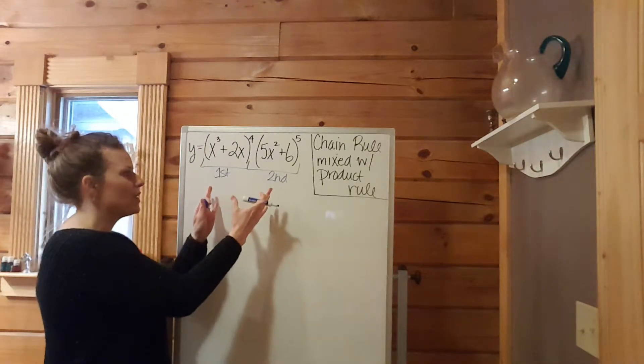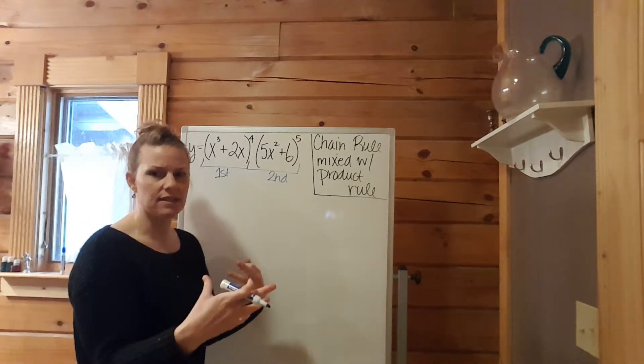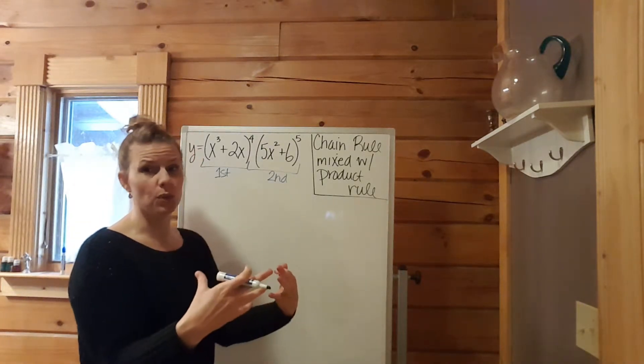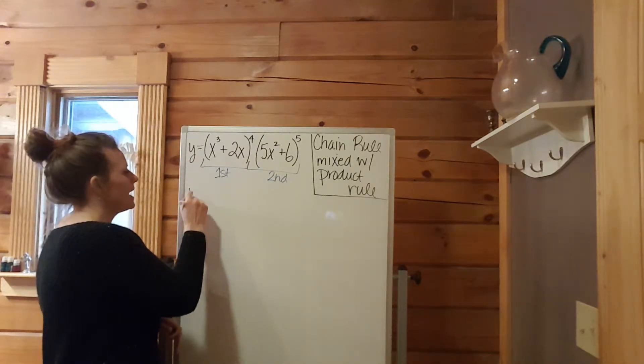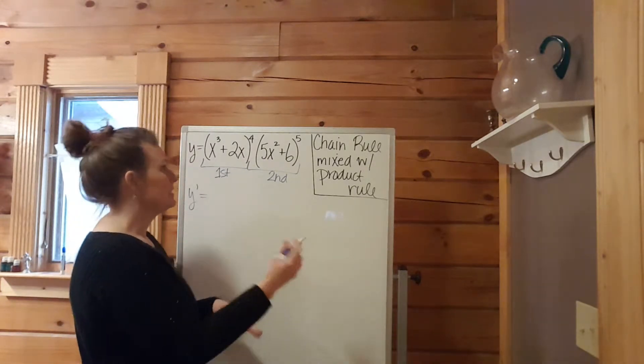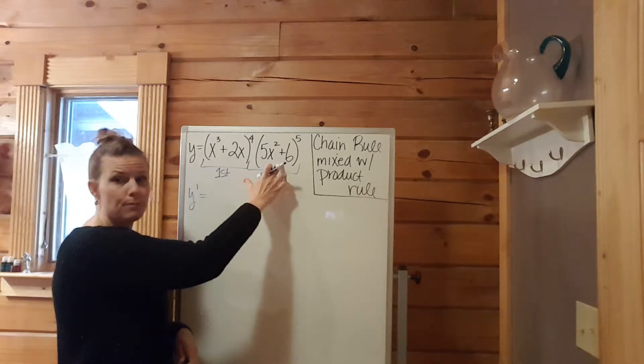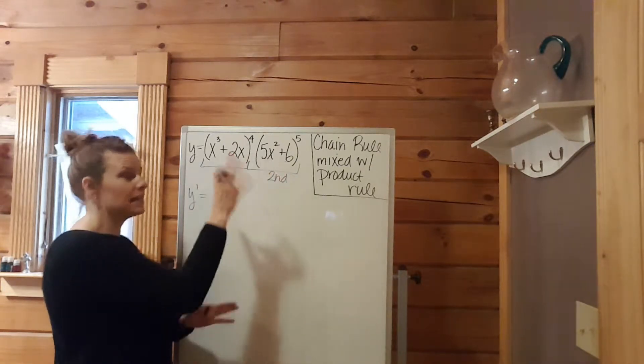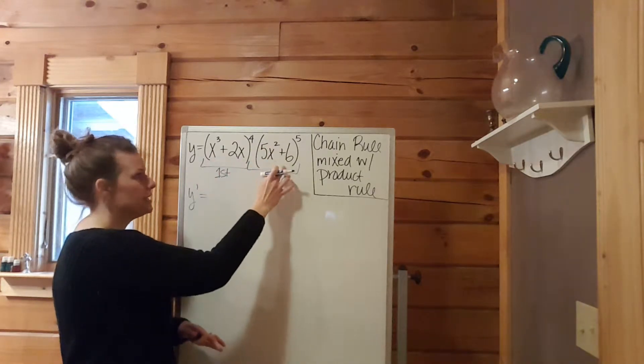Let's go ahead and plug away, and we'll see how this incorporates the chain rule within the product rule. If we start out with y prime, the product rule says derivative of the first times keep the second. That's what we start with - the derivative of the first times keep the second.